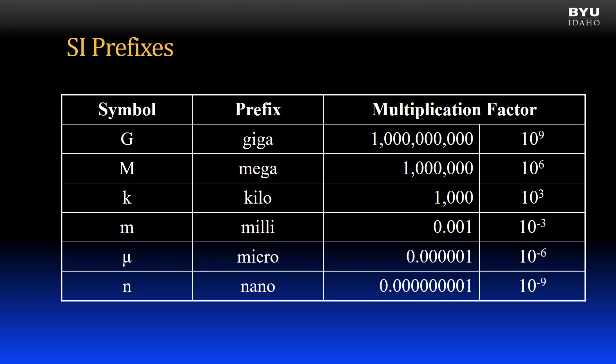You see that the other prefixes giga, milli, micro, and nano are all multiples of 10 to the third power.